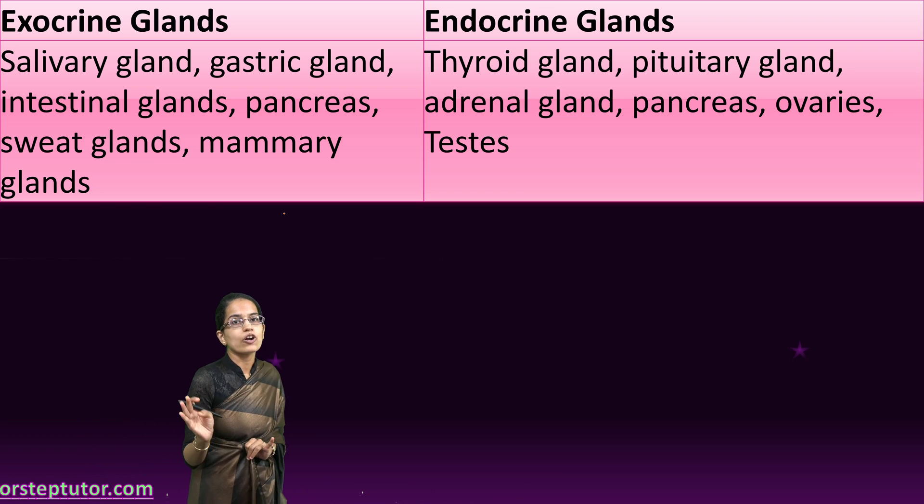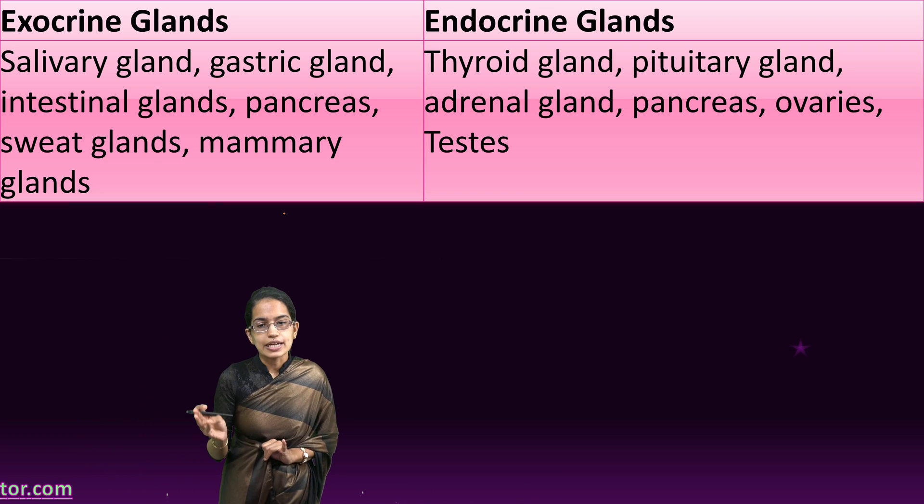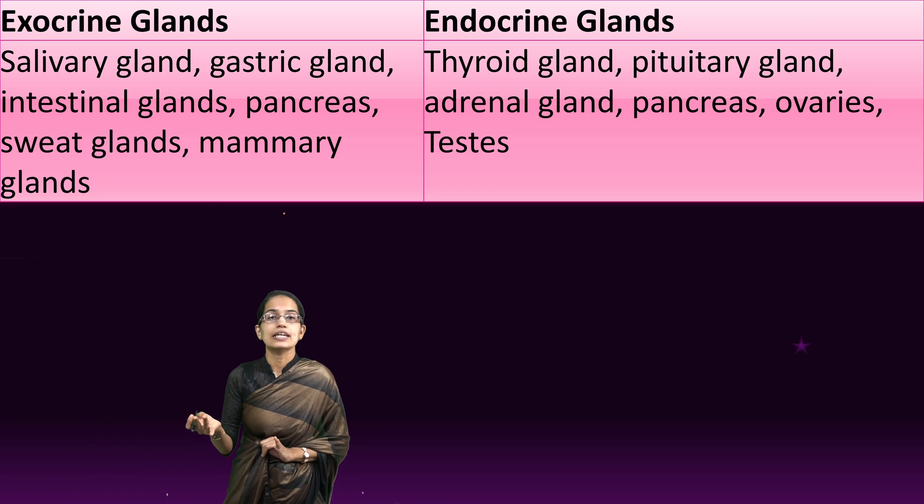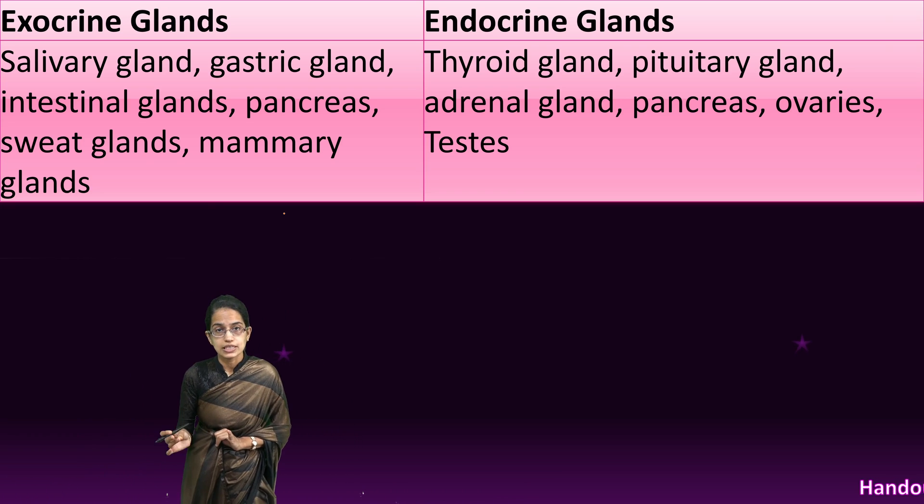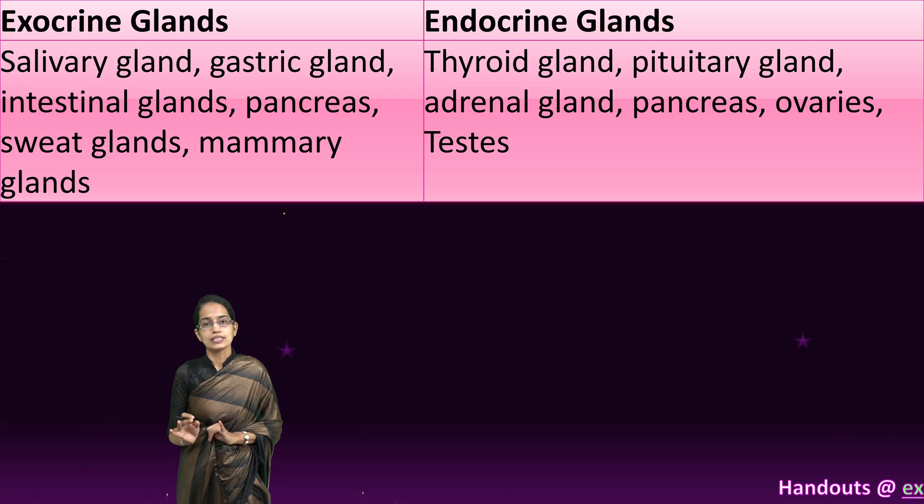Common examples of endocrine glands include the thyroid, pituitary, adrenal, pancreas, ovaries, and testes.